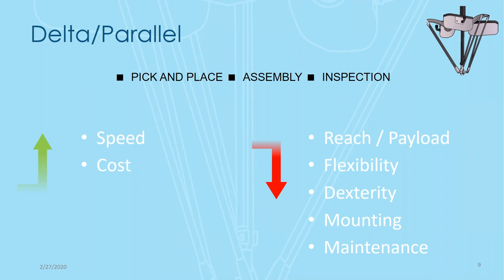Delta robots are always ceiling-mounted, and nine times out of ten you'll see them mounted above a conveyor with more right next to it for the task. They can have some additional maintenance due to the moving linkages, but they truly excel at the applications they're suited for.